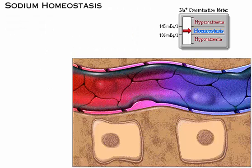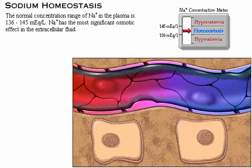The normal concentration range of sodium in the plasma is 136 to 145 milliequivalents per liter, making sodium the ion with the most significant osmotic effect in the extracellular fluid.